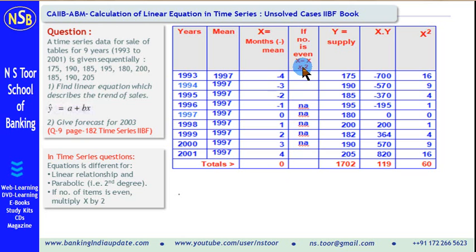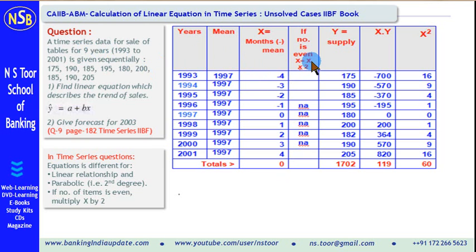Now, if the number of years was even, this value would have been required to be multiplied by 2. But there is no need to do that here, hence this portion is not applicable.